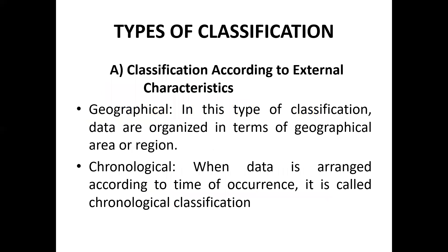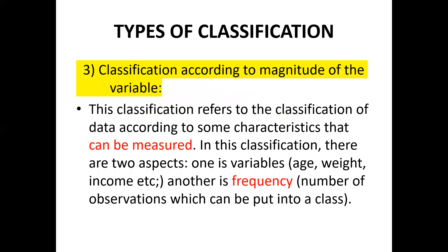The third type is classification according to the magnitude of the variable. This refers to classification of data according to characteristics that can be measured, such as age, weight, and income. There are two aspects: the variable itself (age, weight, income) and the frequency — the number of observations which can be put into a class. A frequency distribution can be made to aid this type of data classification.